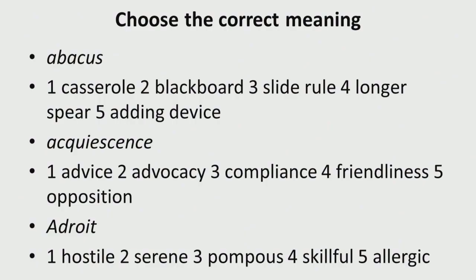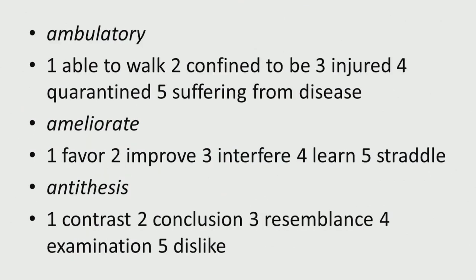Keep looking up the meanings of each word shown here and mark the word closest in meaning to the keyword. Third word: 'adroit' — choices are hostile, serene, pompous, skillful, allergic. 'Ambulatory' — does it mean able to walk, confined, injured, quarantined, or suffering from disease? 'Ameliorate' — choices: favor to improve, interfere, learn, straddle.